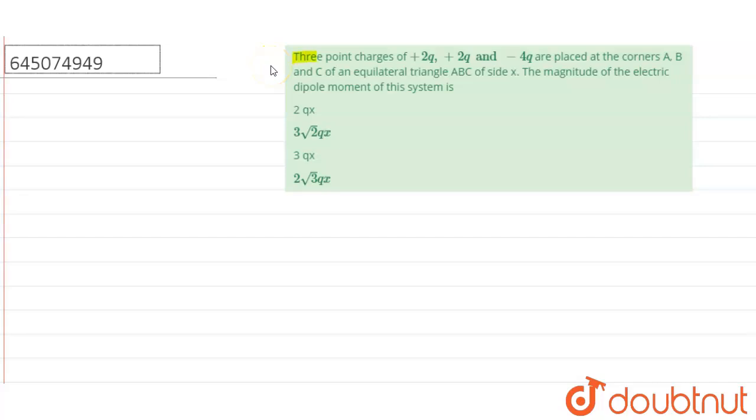Hello everyone, three point charges of plus 2q, plus 2q and minus 4q are placed at the corners A, B and C of an equilateral triangle ABC of side x. The magnitude of electric dipole moment of this system is, four options are there.